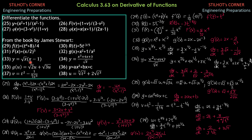Problem 33: y = √x · (x - 1). Distributing first: √x · x = x^(3/2), and √x = x^(1/2), so y = x^(3/2) - x^(1/2). Differentiating by the power rule: DY/DX = (3/2)x^(1/2) - (1/2)x^(-1/2). Rewriting: DY/DX = (3/2)√x - 1/(2√x).